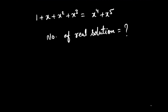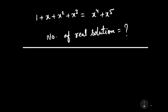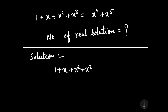Now let us start to solve this question. Our question is 1 plus x plus x squared plus x cubed is equal to x to the power 4 plus x to the power 5, and we have to find the number of real solutions.